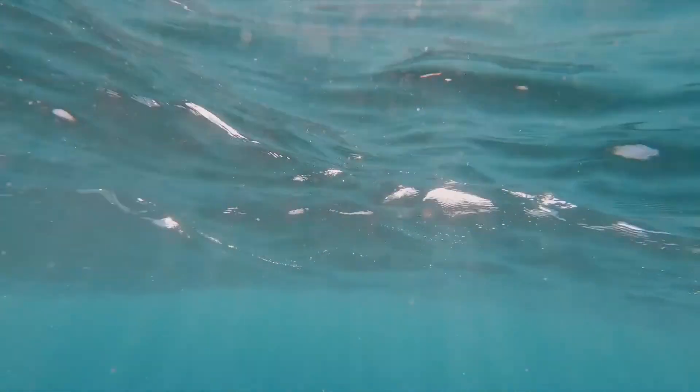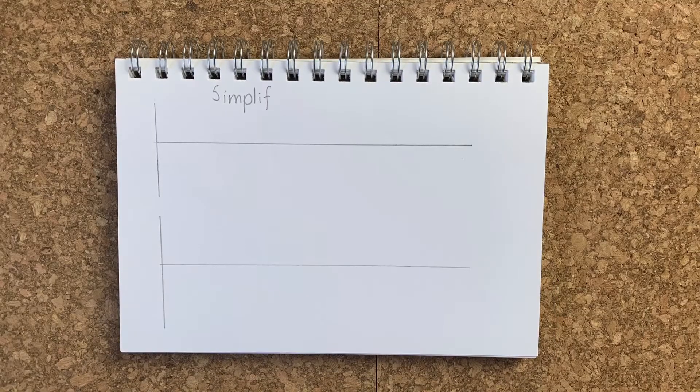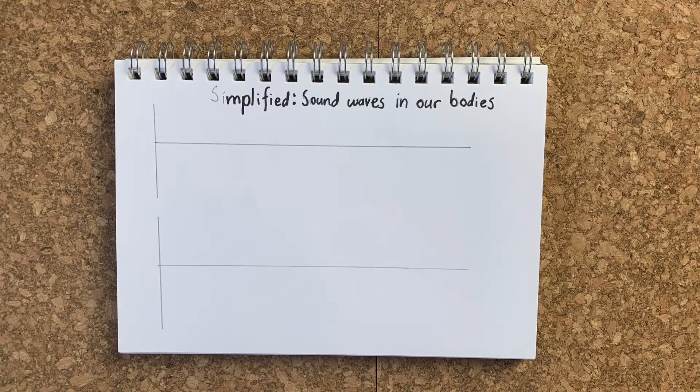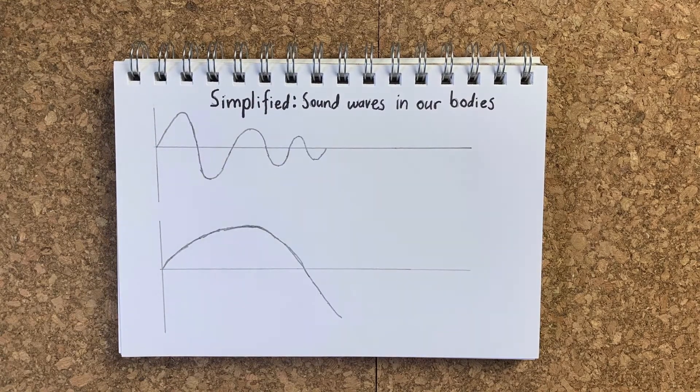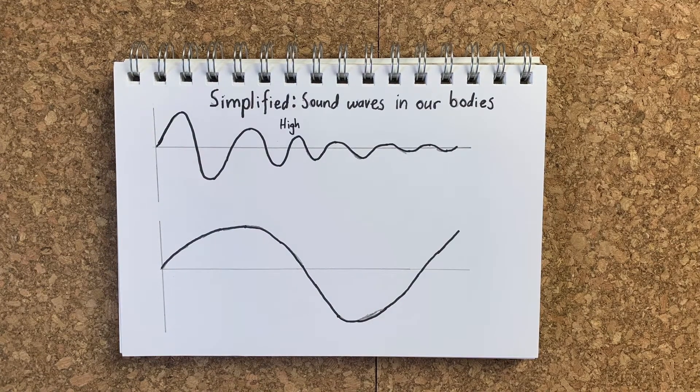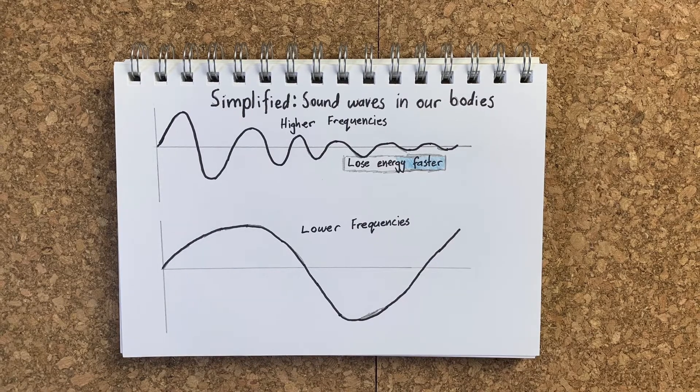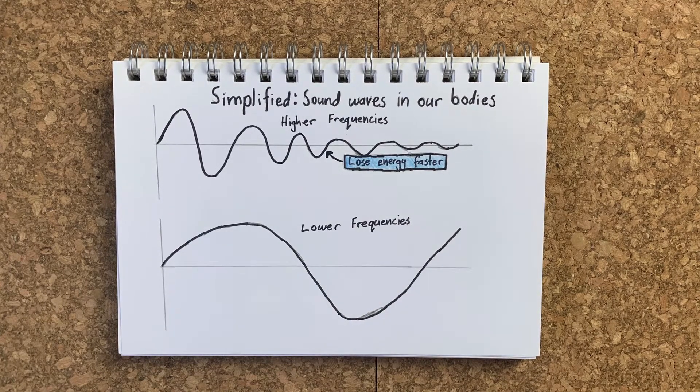That's because when I speak, it's not just the air that's vibrating — my vocal cords are making my body vibrate as well. My body, which is made up of bones and flesh and all sorts of things, is mostly made up of water. Water absorbs vibrations faster than air does; there are more molecules, so it takes more energy for a wave to push through them. As sound travels through our bodies, the higher frequencies lose energy a lot sooner than lower frequencies. Lower frequencies vibrate more slowly, so they lose energy more slowly than higher frequencies.